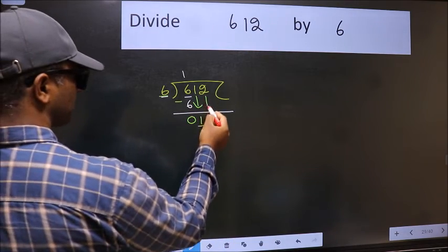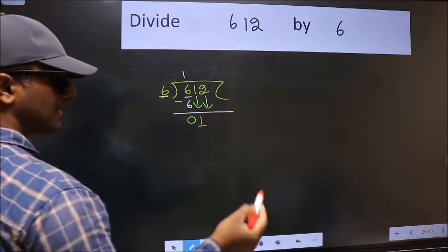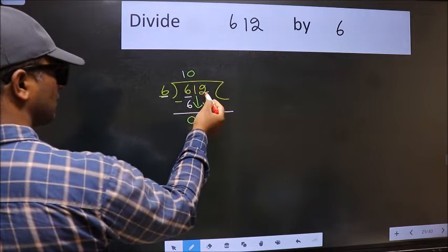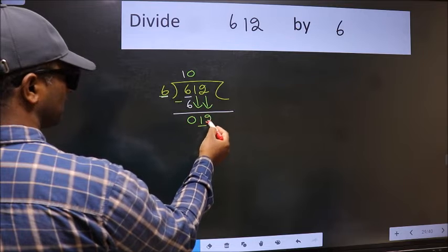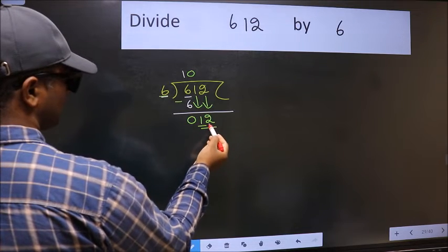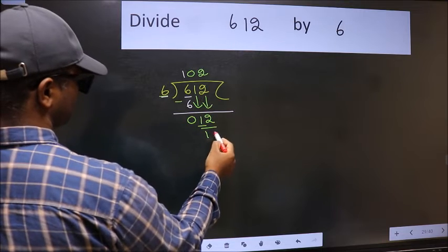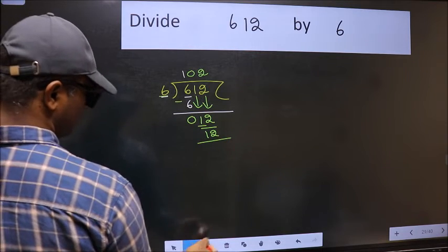The second number. The rule to bring down the second number is we should put zero here, then only we can bring this number down. Now 12. When do we get 12 in the six table? Six twos 12. Now we should subtract.